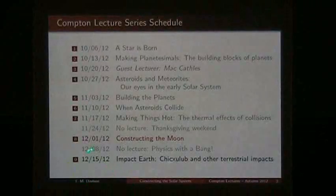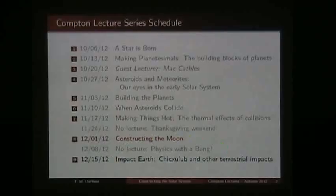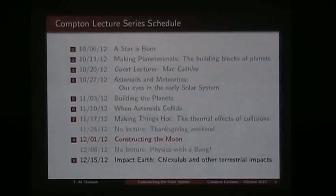In the last couple of lectures, we've looked at the kinds of processes that can occur when asteroids or planetesimals collide at high velocities — the different types of effects that can go on during those collisions. And today we want to look at how the moon came into being. Next week there is no lecture; there's an event here for physics. You can go on the web to find out all the details. In two weeks' time will be my final lecture, and we'll look specifically at impacts on the Earth and how that's affected our planet through time.